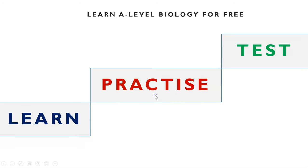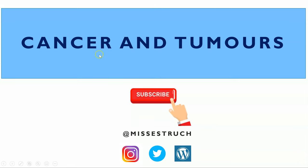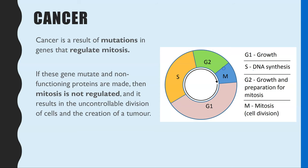Hi everyone and welcome to A-level biology. In this video I'm going to be going through cancer, different types of tumors, and tumor formation. Cancer is a result of mutations in genes that regulate mitosis. If you have a gene mutation in one of those genes, you will potentially create a non-functioning protein. That protein's normal role is to regulate mitosis — to indicate when mitosis should begin and when it should stop. If it's now non-functioning, you get uncontrolled mitosis or cell division, and that creates a tumor. Some of these tumors are cancerous.